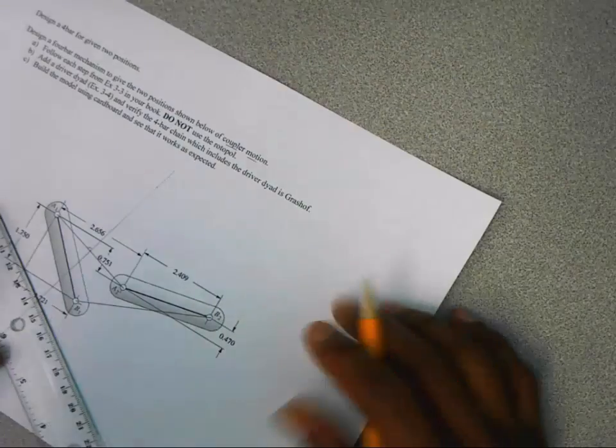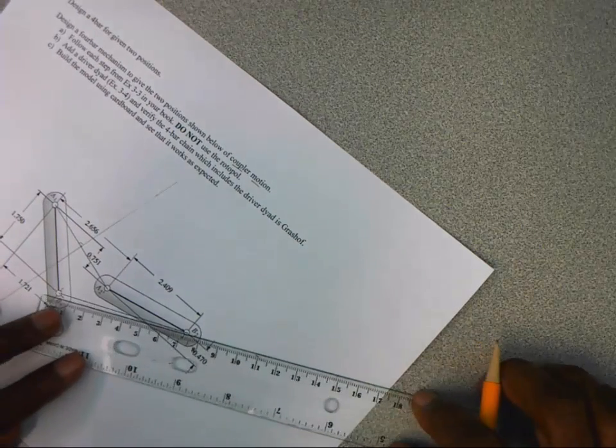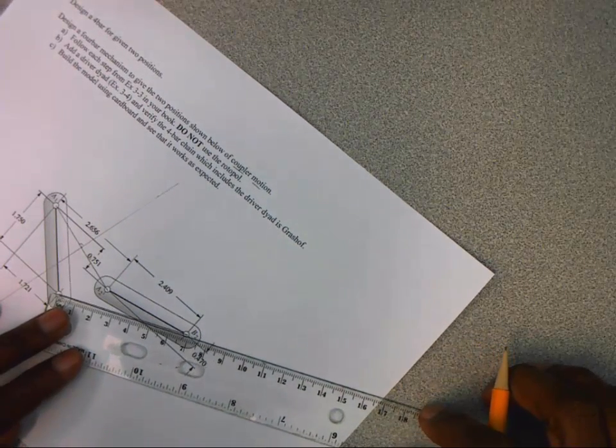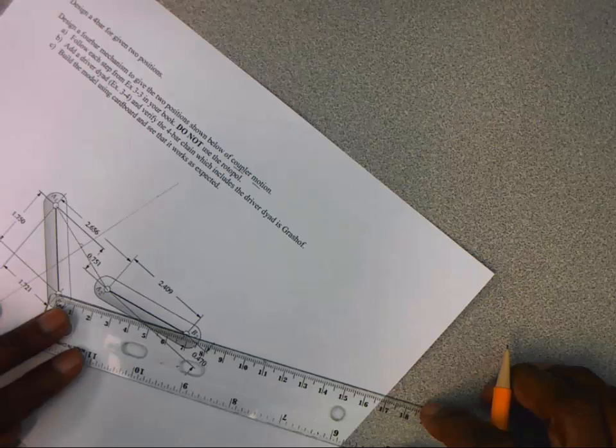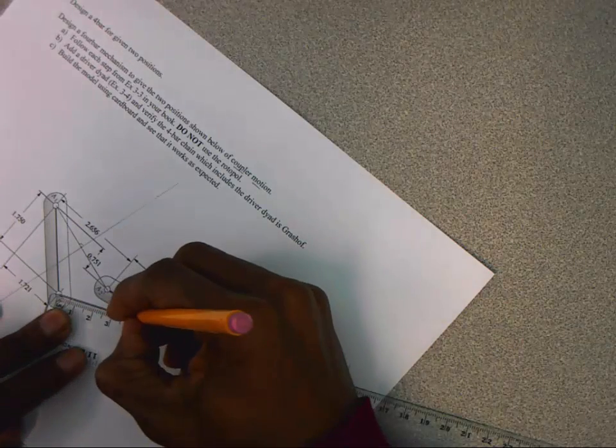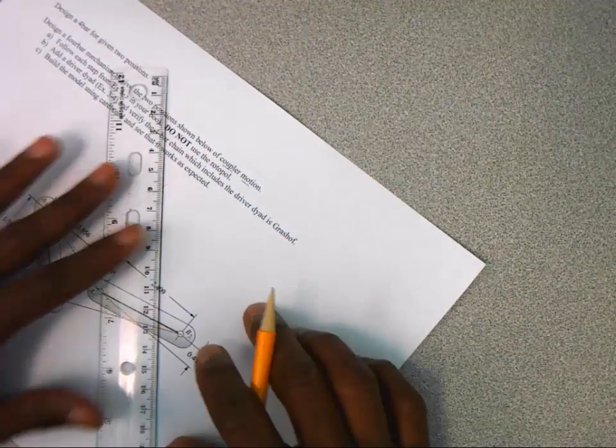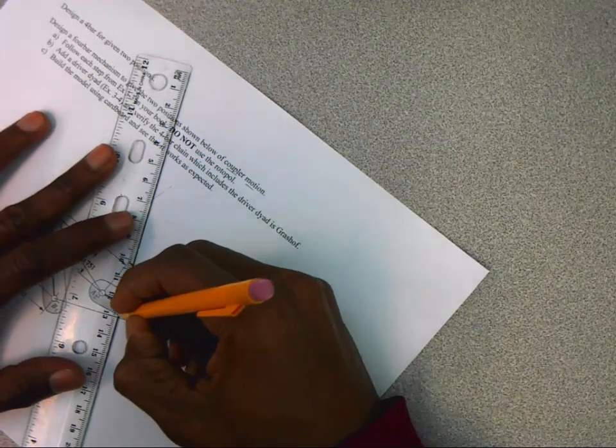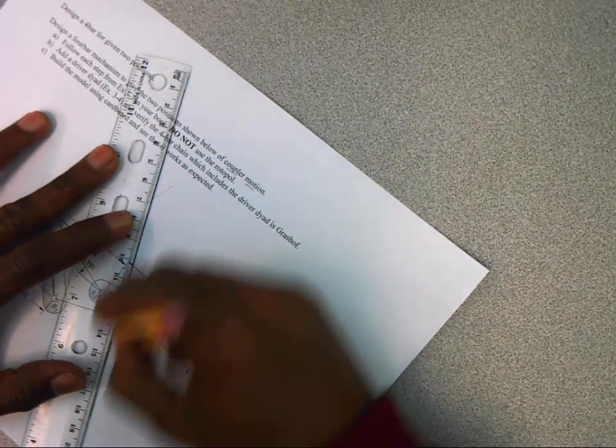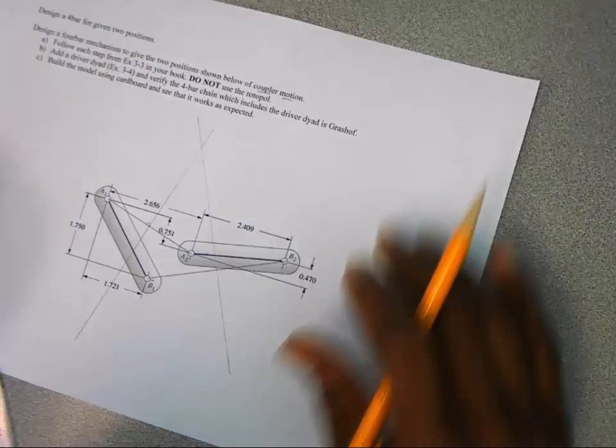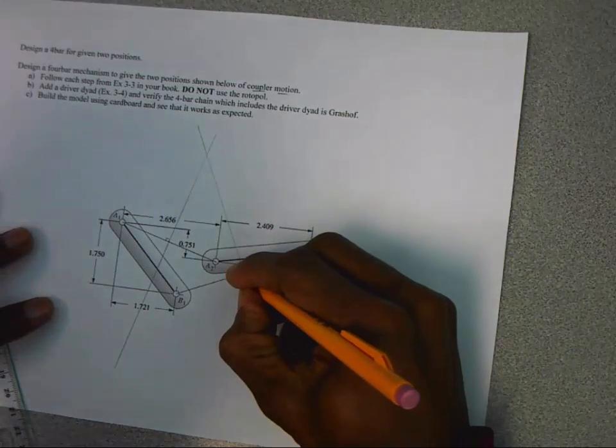So we're not using a rotopole. So even though we are perpendicularly bisecting each of these lines, each of these line segments, the intersection of them, which would be the rotopole, is not going to be used. And so while these do intersect here, we're not going to use that intersection for anything in particular.